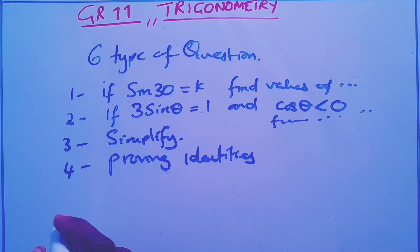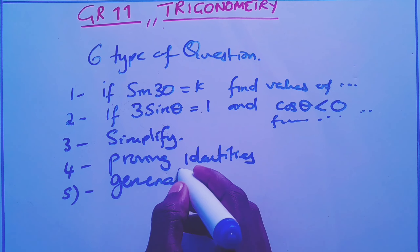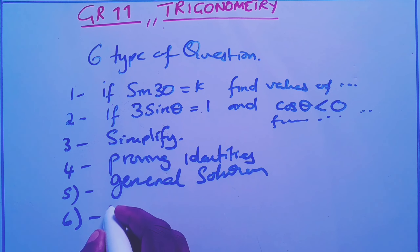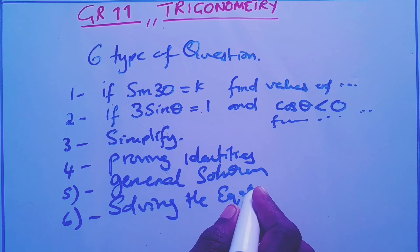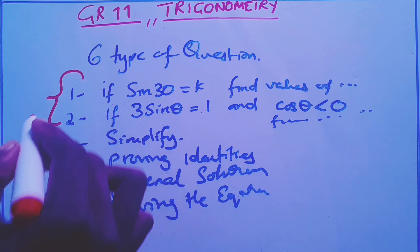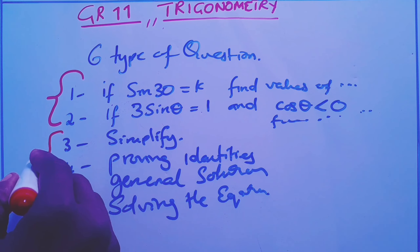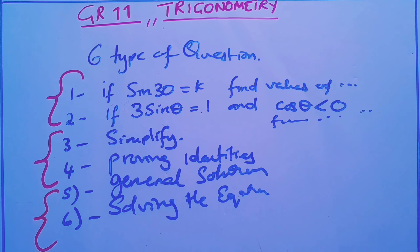The fourth type is proving identities. The fifth type is the general solution. The sixth type is solving the equation. If you look carefully, these six types actually form three pairs — each pair uses the same rules — so I'm going to show you how to deal with each pair.